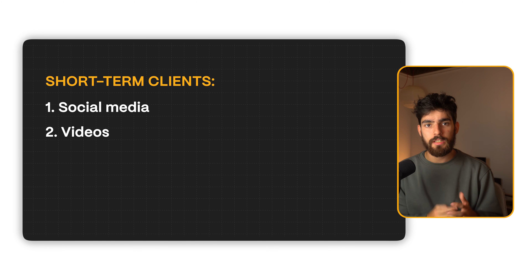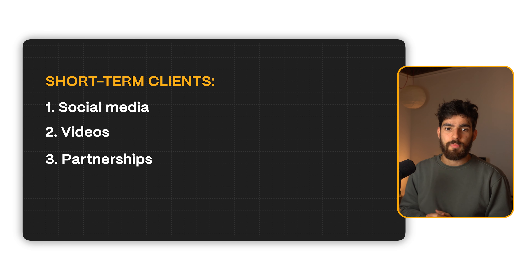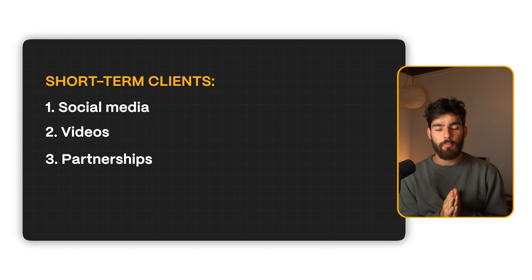Number two is videos — obviously, this video is how you now know about my agency. Number three is partnerships: partnering up with different agencies and businesses that have different services to us, so we can help them become a more complete offering. For example, if we partner up with a branding agency, they can charge more money by including us in their package for web design and development. They get to charge a higher amount, we get a project, and if we ever have a branding project we pass it off to them. You can do this with SEO agencies, photography agencies, brand agencies.